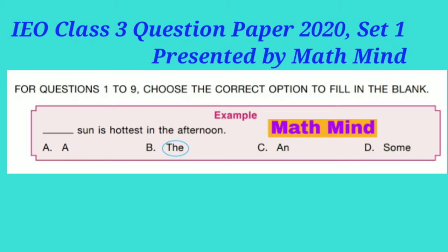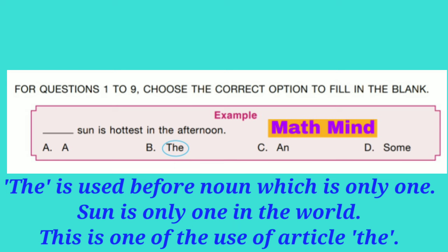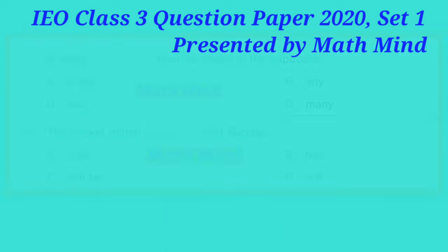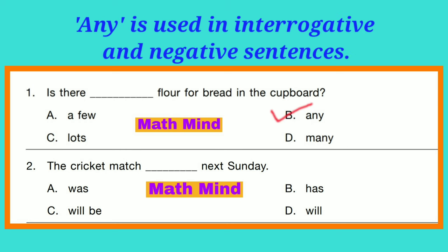Word and Structure Knowledge. For questions 1 to 9, choose the correct option to fill in the blank. Example: 'The sun is hottest in the afternoon.' 'The' is an article used before 'sun,' which is only one in the world. Question 1: 'Is there dash flour for bread in the cupboard?' Option B is correct: 'Is there any flour?' 'Any' is used before interrogative and negative sentences. This is an interrogative sentence, so 'any' will come.